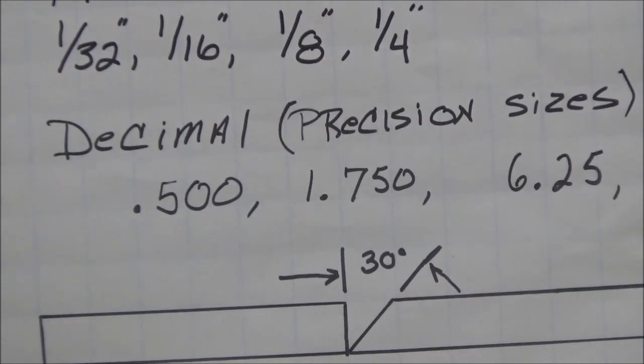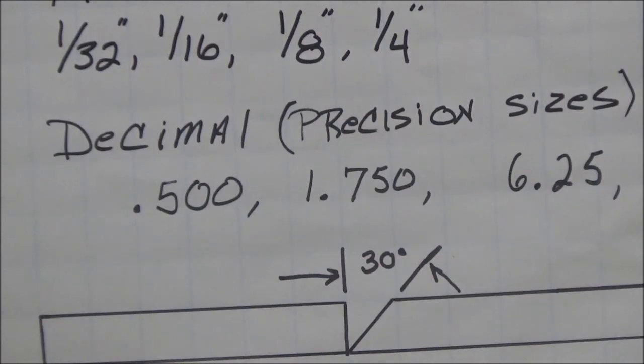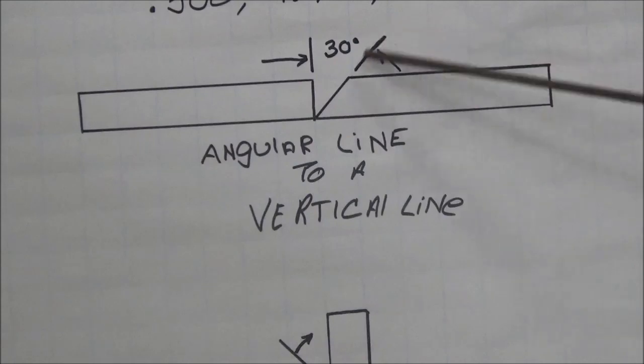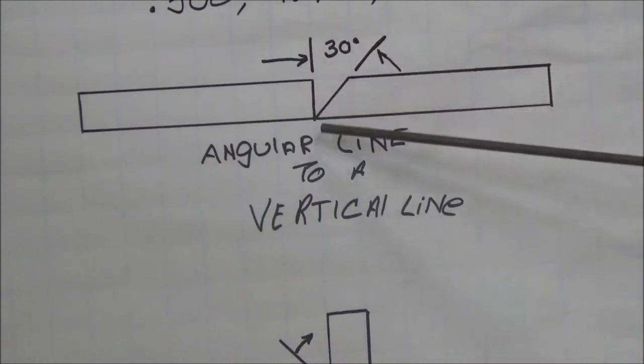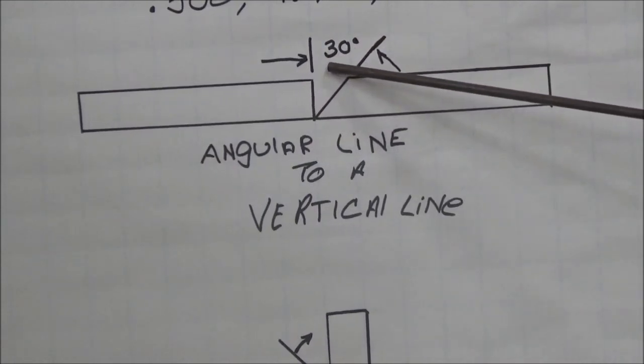Now, last but not least, I want to talk to you about angular dimensions because that's going to be very important to you as a welder when it comes to setting up parts. Alright, the very next one we're going to take a look at in our angular lines is just very simple, and that's an angular line to a vertical line. So, this angular line to this vertical line here. And you'll notice that it has been dimensioned in degrees, 30 degrees.